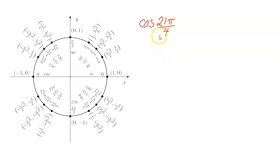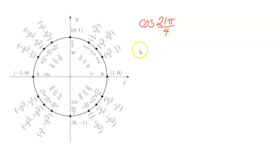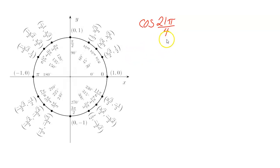If you want to evaluate the cosine of 21π over 4, first you need to find it on the unit circle. Remember, if you double the denominator, that tells you how many sections there are in your circle for that angle. So 4 times 2 is 8, meaning there are 8 π-over-4s in one revolution around the circle.